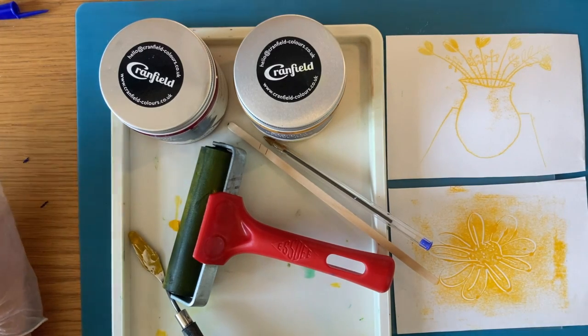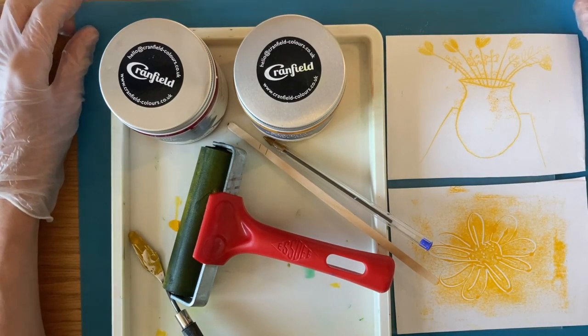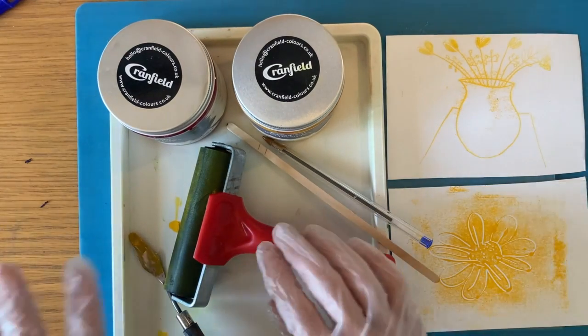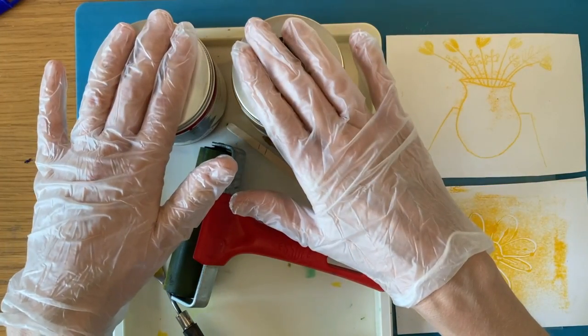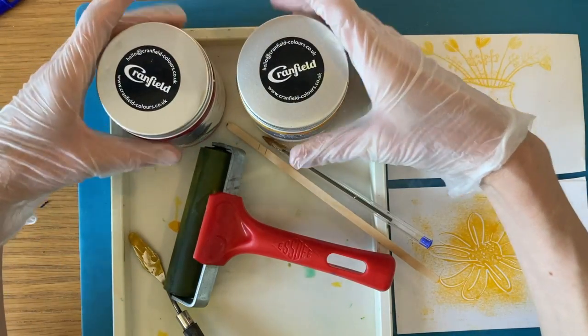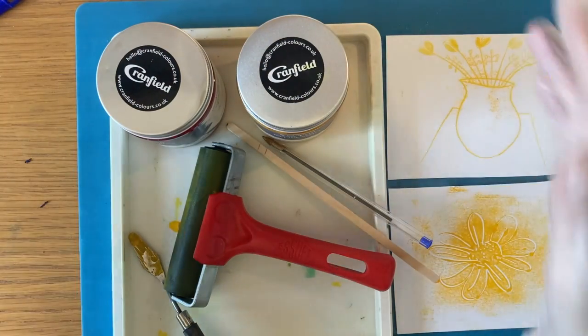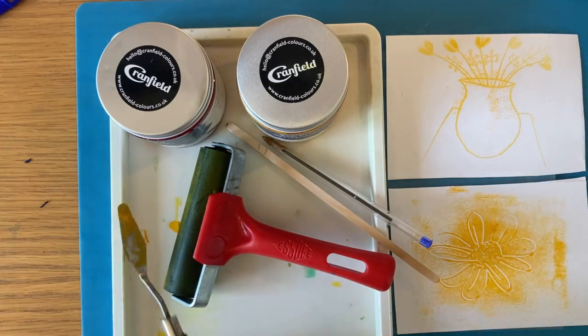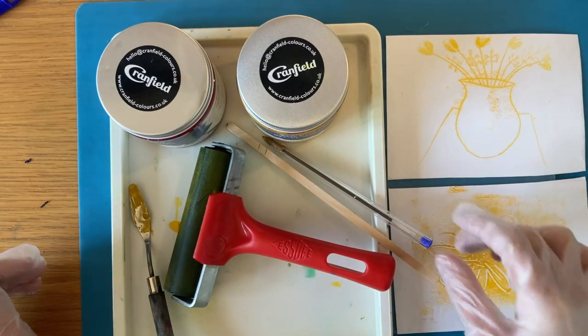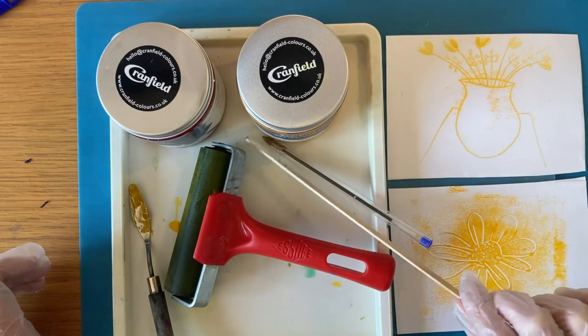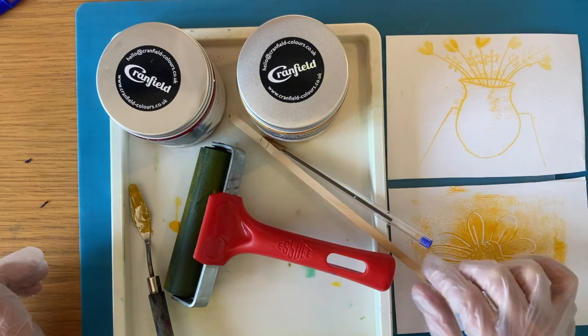So in your box you will have a blue mat, a tray, a roller, some printing ink, some paper, and you've also got a palette knife, a pen, and a lolly stick.